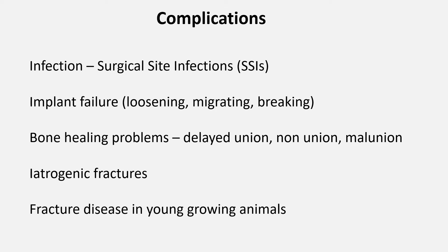The main complications we're concerned about include infection — surgical site infections occurring after the surgery in the area where it was performed. Failure of the fixation mechanically, for example loosening, migrating and breaking of implants. Bony delayed unions, non-unions and mal-unions. Iatrogenic fractures and fracture disease — this is usually young animals involving the quadriceps muscle groups.